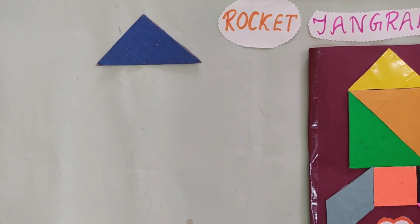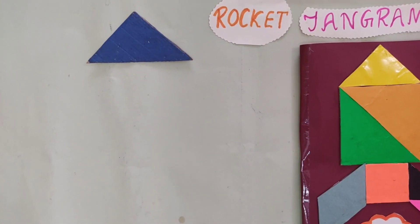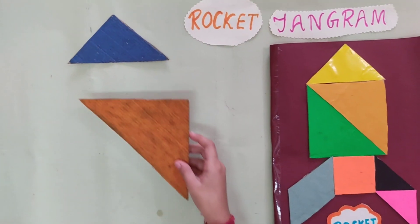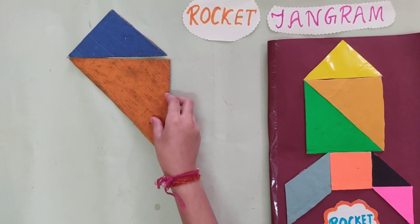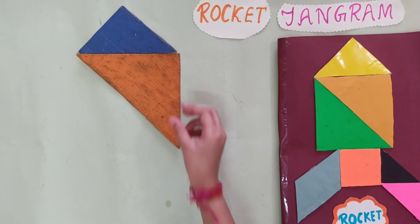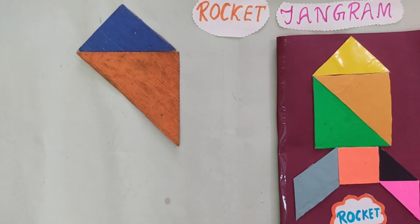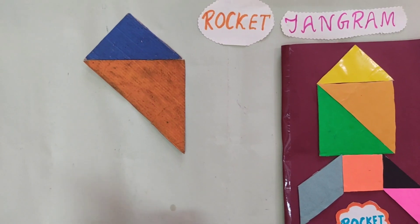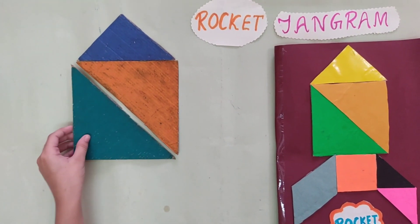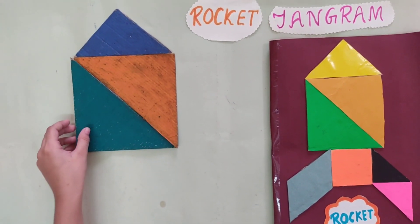Then we take a big triangle and place like this. Then we take another big triangle and place like this.